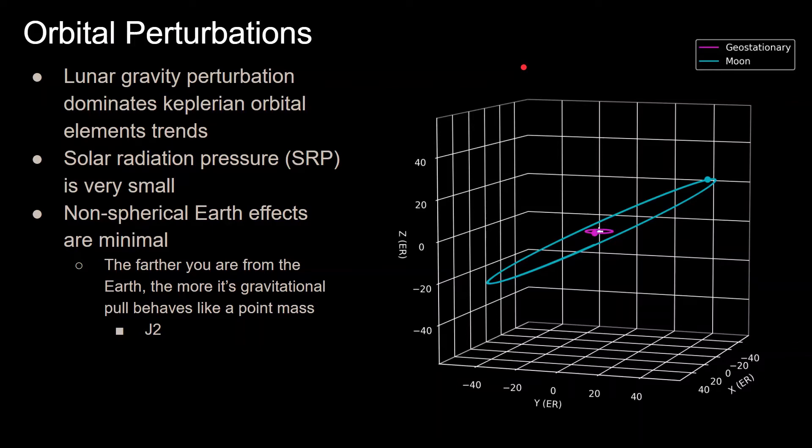There's also solar radiation pressure acting on the spacecraft, but this is very small compared to the lunar gravity, and also the non-spherical Earth perturbations on the geostationary orbits are very small, since the farther that you get away from Earth, the more it behaves like a point mass.